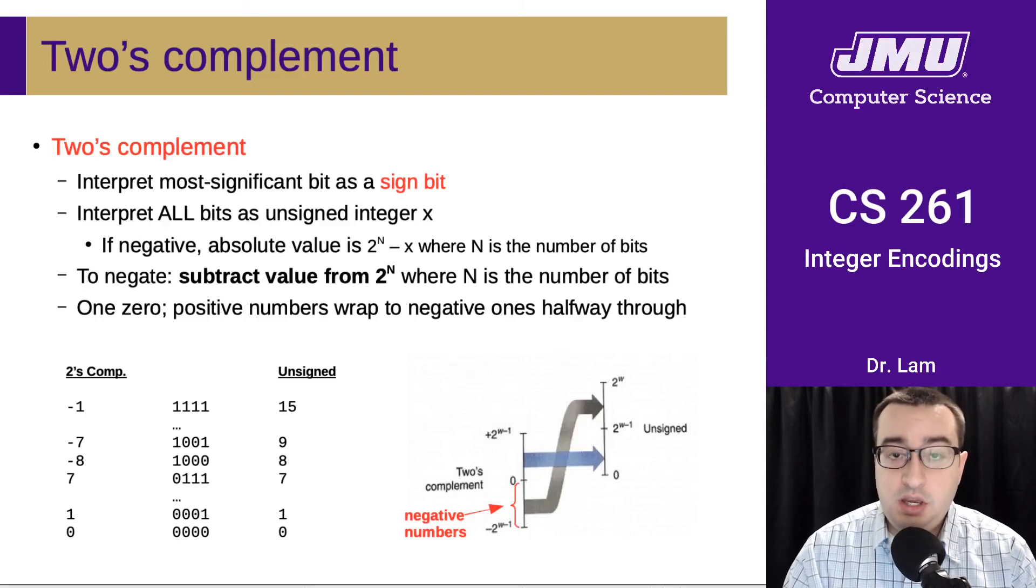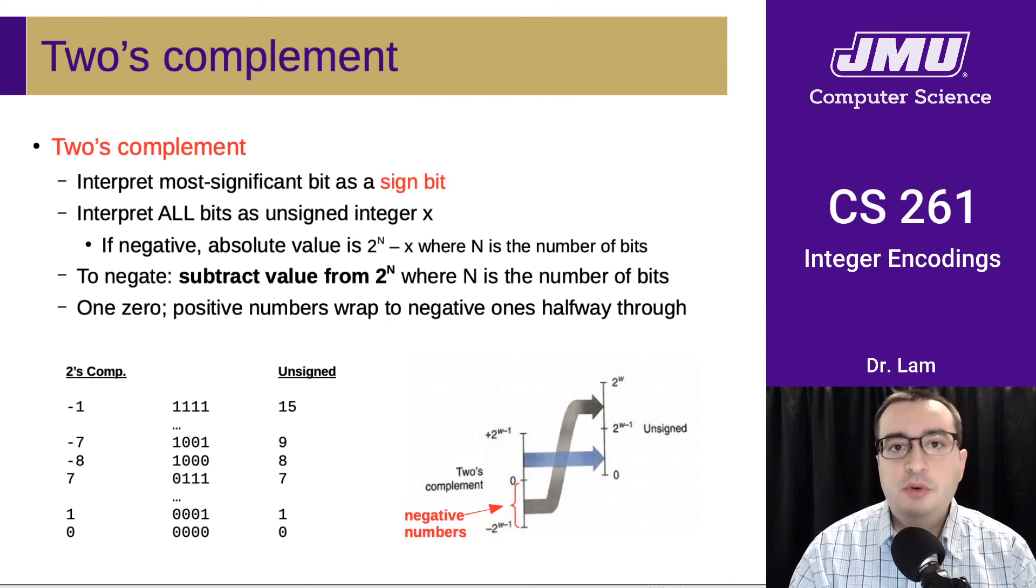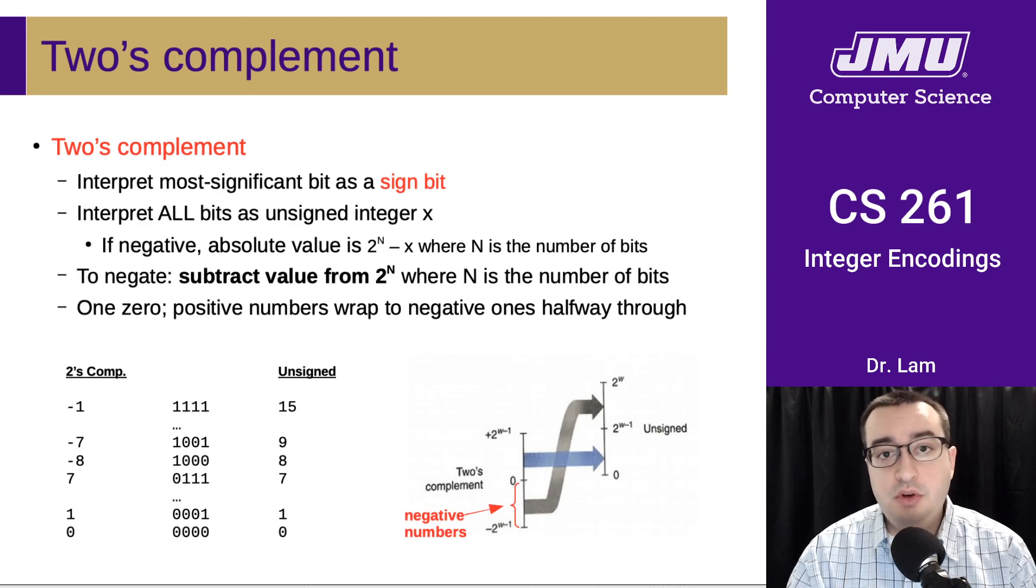Okay, so we've seen two ways to represent signed integers in binary. Those two were relatively straightforward, but it turns out that they're not so useful for arithmetic.